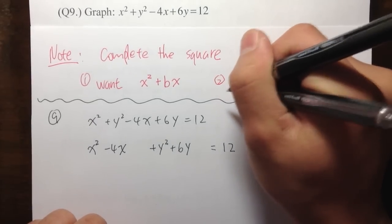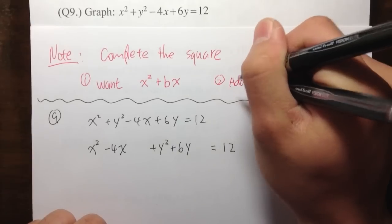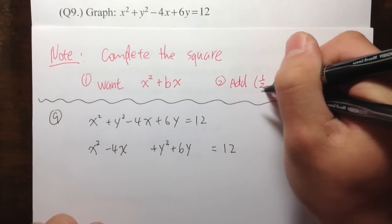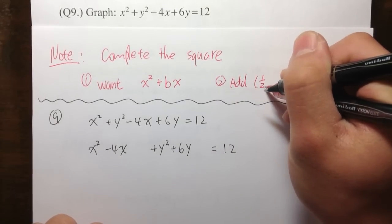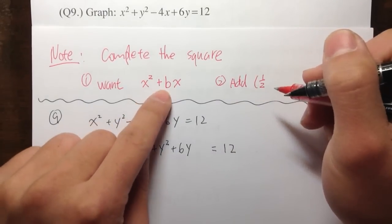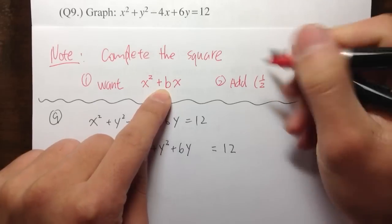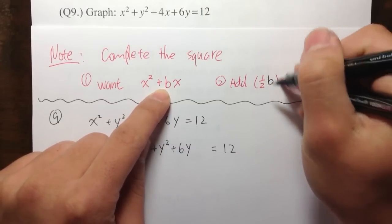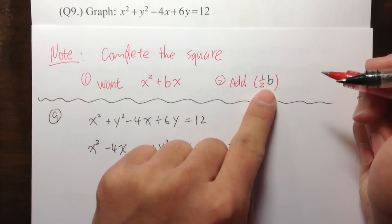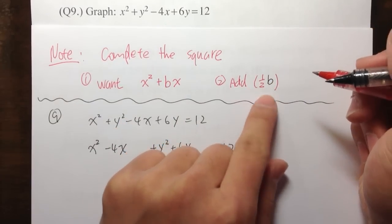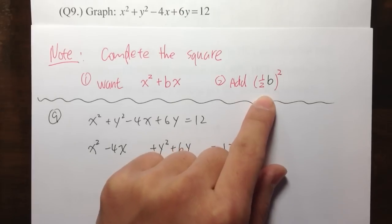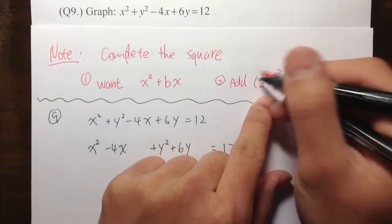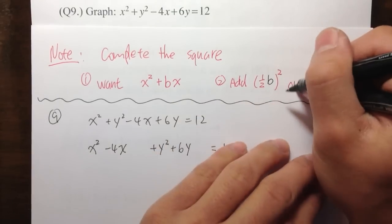Next, what I need to do is add a number. You take one half and then multiply by the number b — so one half times b — and then you square whatever the result is. You want to add the whole thing on both sides.